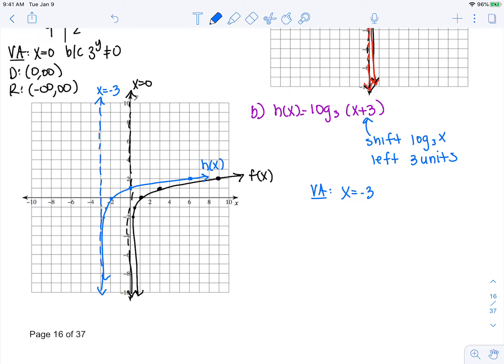From shifting left 3, our vertical asymptote shifts left 3, and now our domain is going to change. It's now from -3 to infinity, and our range is still the same, negative infinity to infinity.